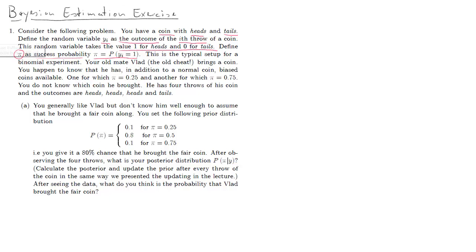And Vlad has three coins. He has a normal coin and two biased coins. The biased coins have success probabilities of 0.25 and 0.75 and a normal coin of 0.5. So now Vlad has brought one of the coins, we don't know which one. All we see is four outcomes: heads, heads, heads, and then the fourth outcome is tail.